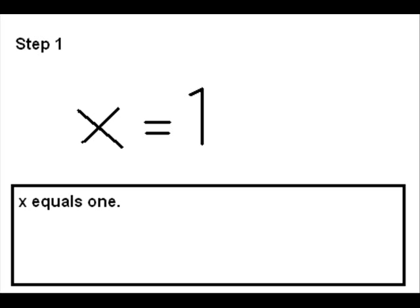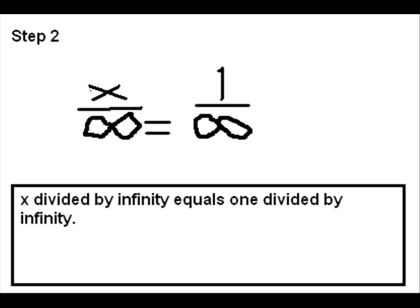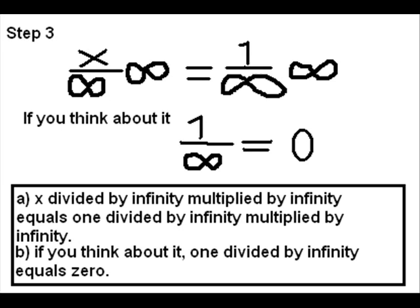To start with, we're going to have something simple: x equals 1. Then, following algebra's rules, we divide both sides by infinity. This is where it gets a bit more complicated. Then we multiply each side divided by infinity by infinity.